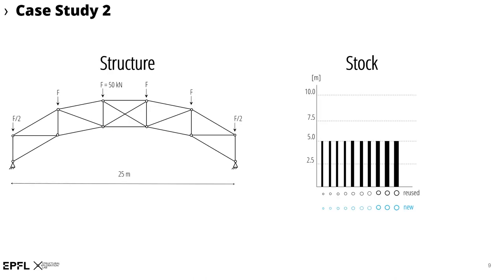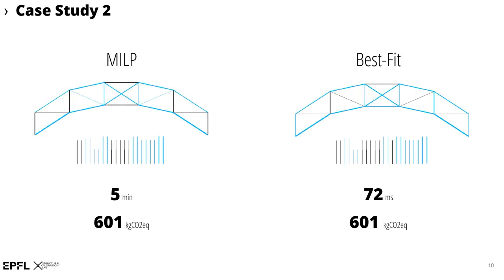The second example represents a statically indeterminate roof structure and again an available stock of elements. In this example, the best-fit produces the same solution as the MILP, but in clearly less computation time. Best-fit is therefore preferable to MILP in this case, in particular when fast results are crucial, as it is the case in the early conceptual design phase. However, if a more advanced planning phase requires reducing environmental impacts as much as possible, it is worthwhile to resort to MILP.